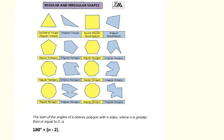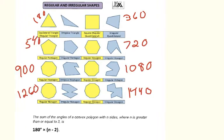The formula is 180 times (n minus 2), where n is how many sides the polygon has. A triangle has three sides: (3 minus 2) = 1, times 180 = 180 degrees. A quadrilateral has four sides: (4 minus 2) = 2, times 180 = 360 degrees. A pentagon's angles sum to 540 degrees.